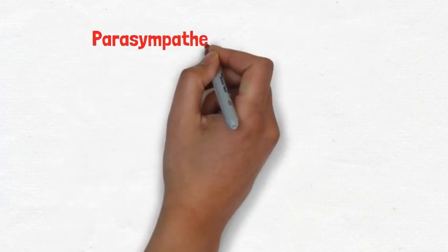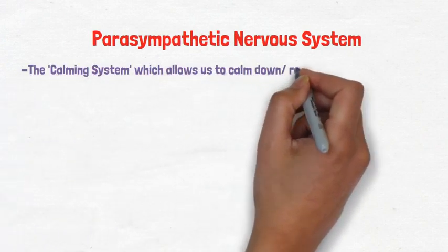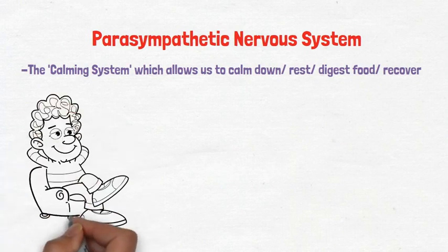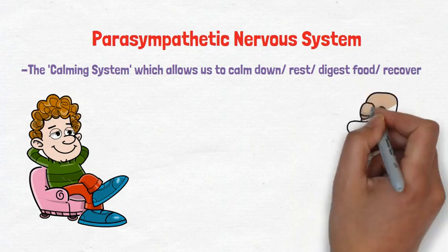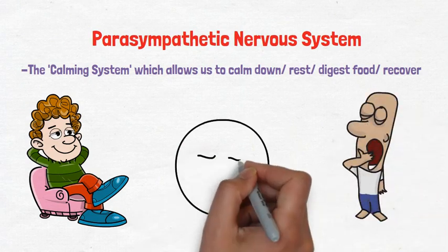Now in opposition to this, the parasympathetic nervous system can be thought of as the calming system, which allows us to calm down and rest and digest food and recover. It basically undoes all of the work of the sympathetic nervous system after a stressful event by doing things like reducing your heart rate, reducing your breathing rate, and inducing a state of calm.